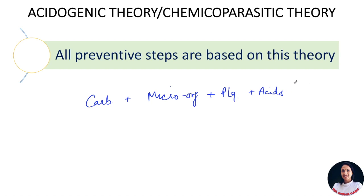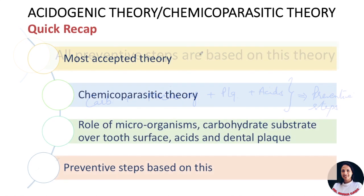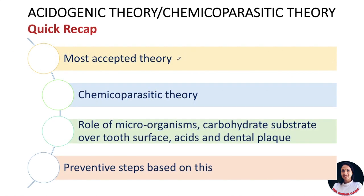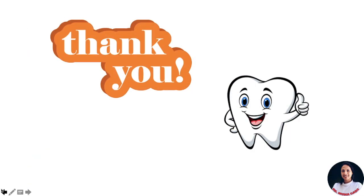Since carbohydrates, microorganisms, and plaque are responsible for caries, most preventive steps are based on this theory. To summarize Miller's chemico-parasitic theory: it is the most accepted theory, explaining that caries is a chemico-parasitic process where microorganisms, carbohydrates, acids, and plaque play an important role. Proteolytic and proteolysis chelation theories are explained in other videos.